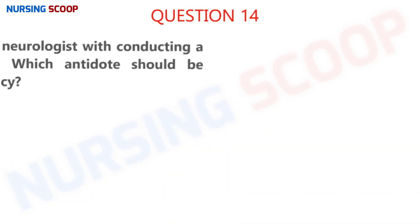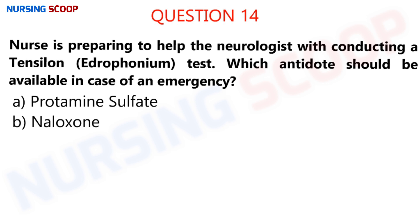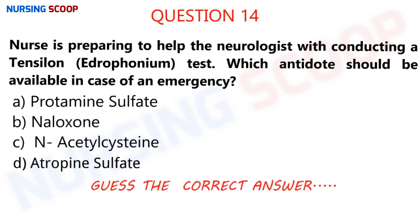Question number 14: A nurse is preparing to help a neurologist conduct a Tensilon test. Which antidote should be available in case of an emergency? Option A is protamine sulfate, option B is naloxone, option C is acetylcysteine, and option D is atropine sulfate.